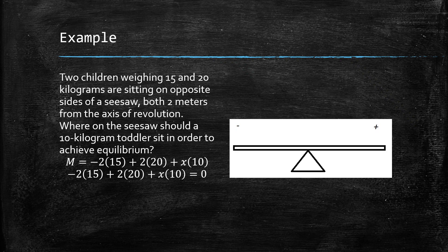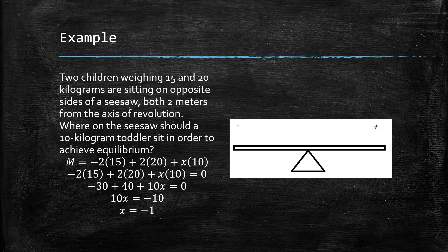We end up with the equation: negative 2 times 15 plus 2 times 20 plus x times 10 equals zero, because we want equilibrium. Solving that equation, we have negative 30 plus 40 plus 10x equals zero, which gives 10x equals negative 10. Solving for x, we get x equals negative 1. That means the toddler should be placed one meter to the left of the center, and all three children will be balanced on the seesaw.